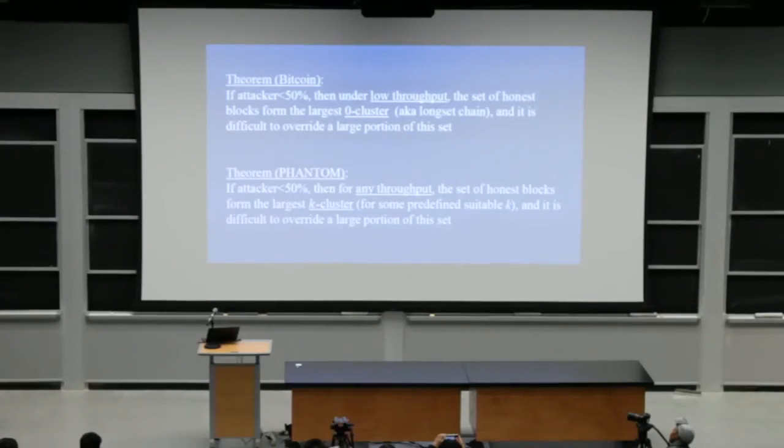And there's some theorems in the paper about how to translate Bitcoin's, compare Bitcoin security to Phantom security. What you can see here is that the zero cluster rule of Satoshi is secure under low throughput. When you don't create many, when you create one block per 10 minutes, the largest zero cluster roughly corresponds to the set of honest blocks. And in Phantom, you first select what throughput you want to support. This implies what your parameter K is. And then picking the largest K cluster is secure, corresponds roughly to the honest set of blocks.